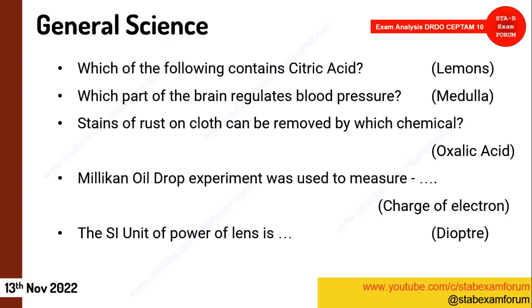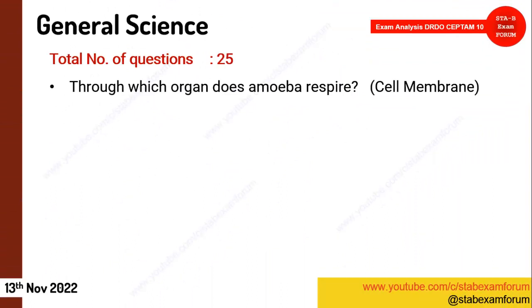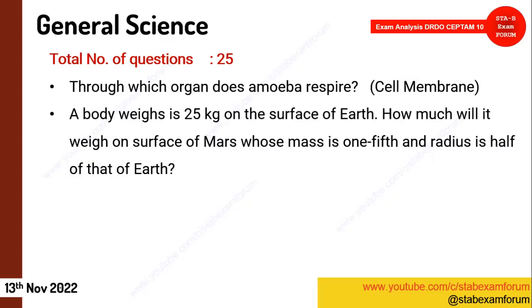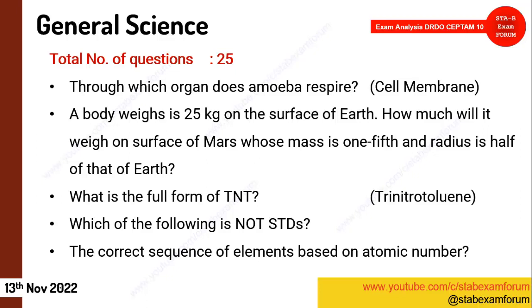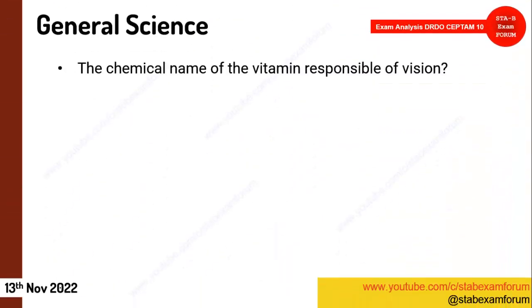Most questions are coming from physics. From biology: 'How does amoeba respire?' — the answer should be through the cell membrane. There was one numerical on the weight on the surface of Earth and that of mass. The full form of TNT from chemistry is trinitrotoluene. Then a question on 'Which of the following is not an STD (sexually transmitted disease)?' — students had to choose which option is not an STD. A question on the sequence of elements based on atomic number also came.